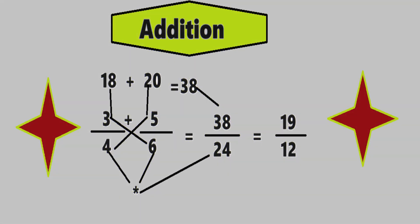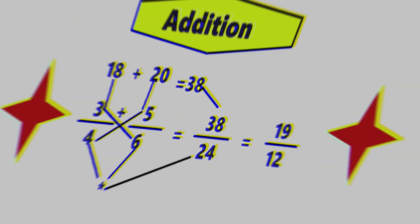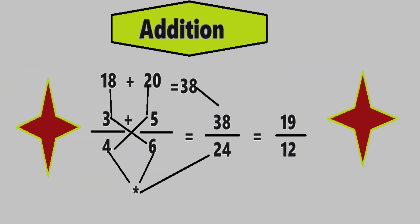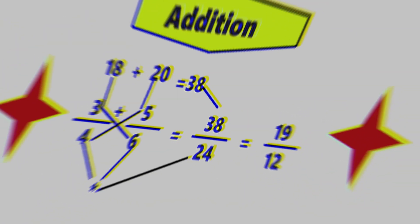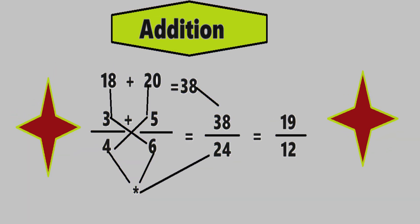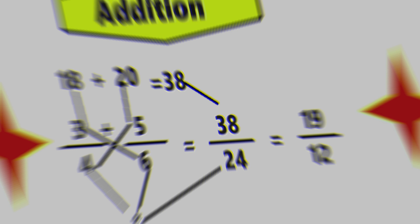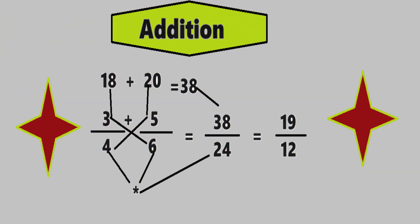Next addition example is 3 by 4 plus 5 by 6. Now cross multiply: 3 into 6 which is equal to 18, and 4 into 5 which is equal to 20. Now 18 plus 20 is equal to 38, and that becomes the numerator. Now 4 into 6 which will give us 24, and that becomes the denominator. The resultant is 38 divided by 24, that gives us 19 divided by 12. That's it.